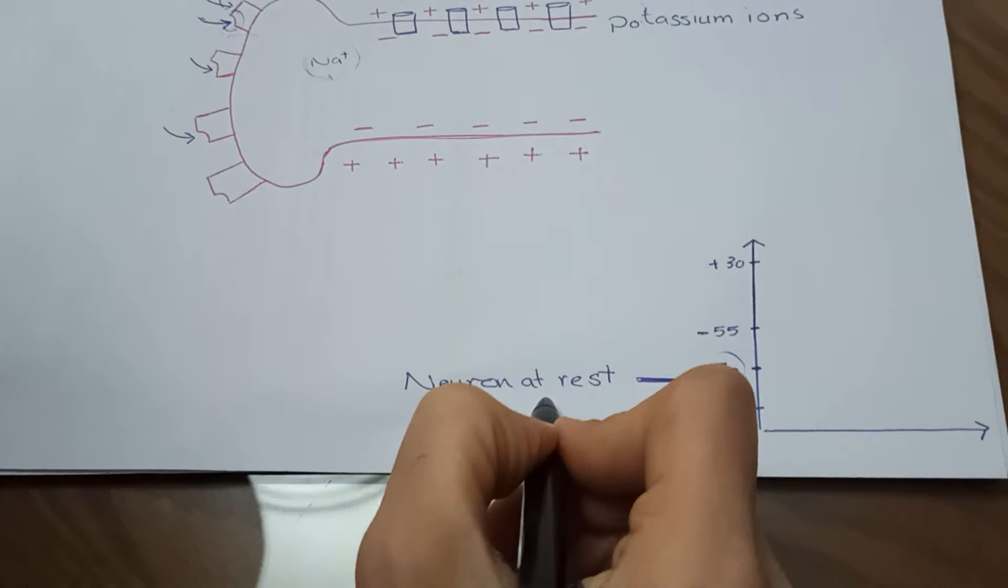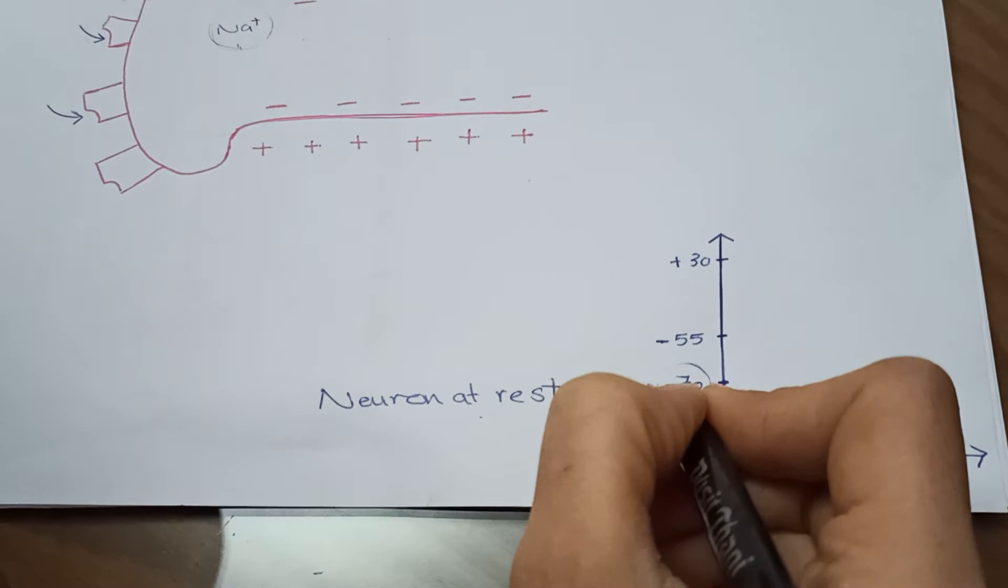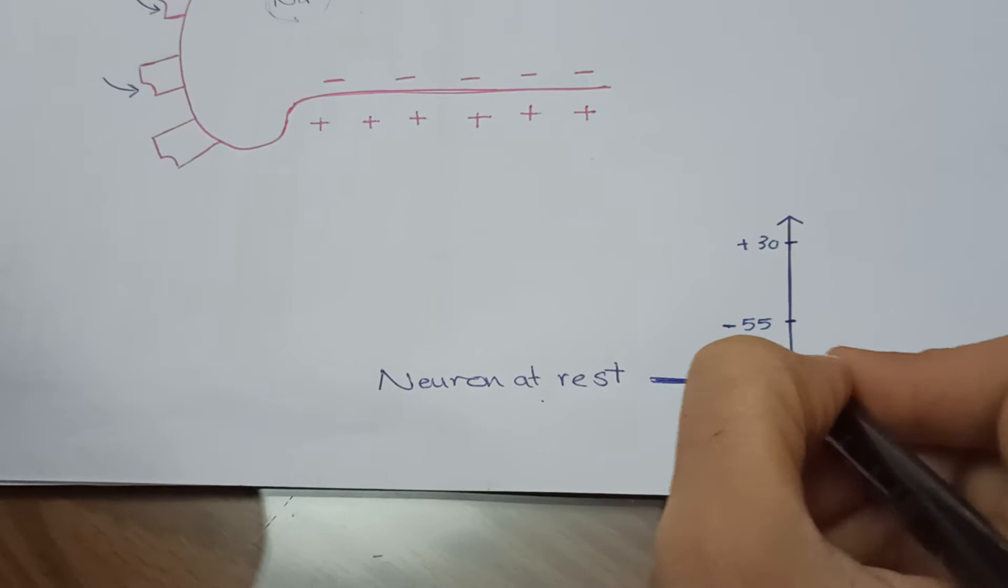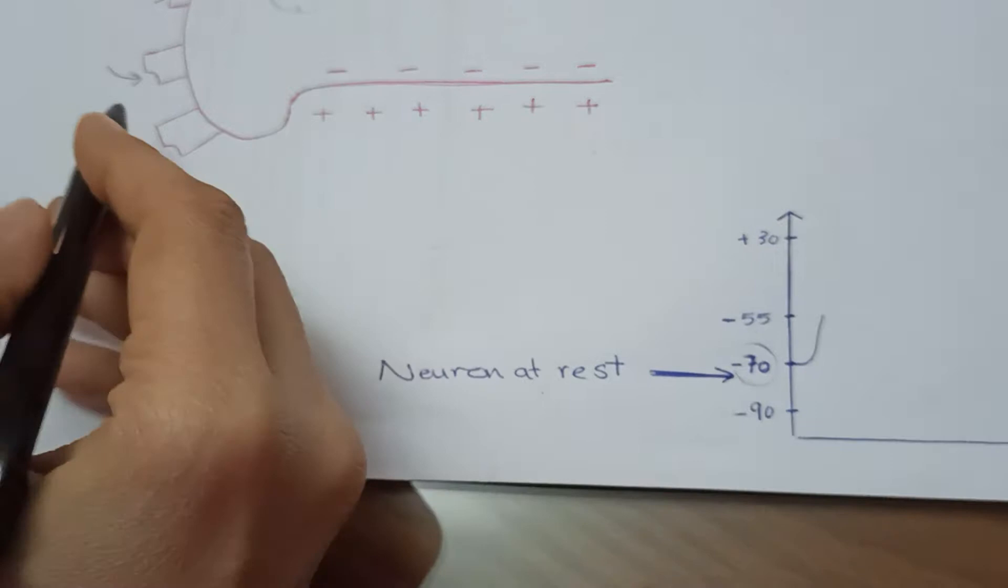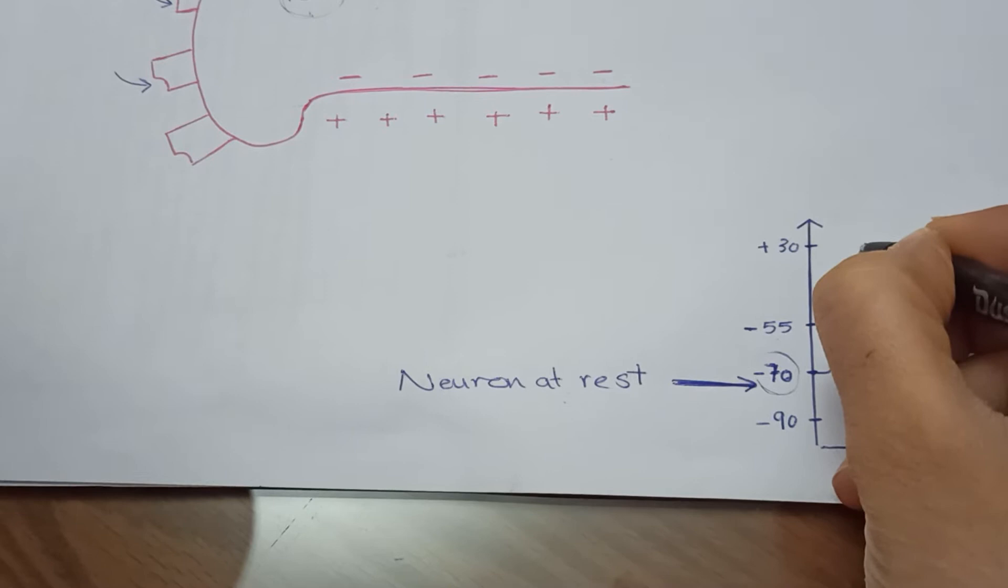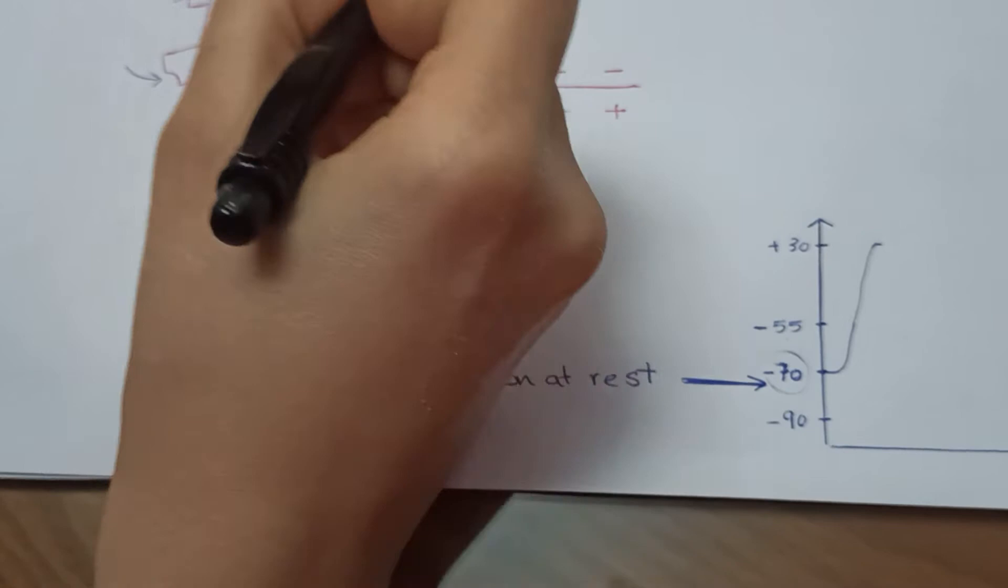When the positive charge starts to increase, it reaches minus 55, which is less negative charge, and this process continues till it reaches positive 30. So it is more positively charged inside the cell than outside the cell.